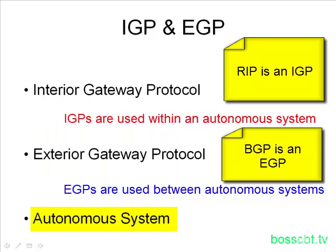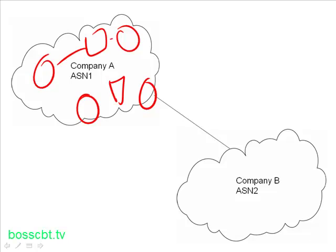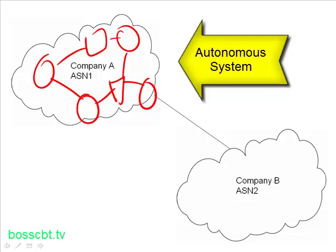Let's take a look at a diagram to further illustrate these concepts. We have two companies here — Company A and Company B. On Company A's network, they have routers, switches, PCs, and everything linked together however their network is designed. This is an independent network under Company A's control — they administer it and are responsible for it. So they're considered an autonomous system, and here they've been assigned autonomous system number one.